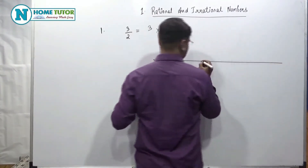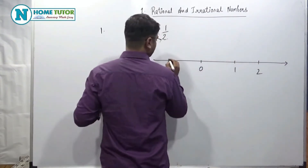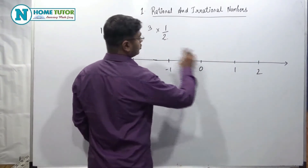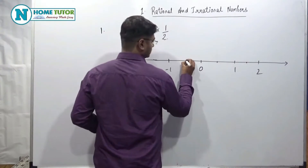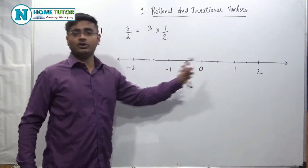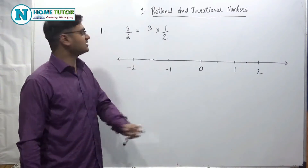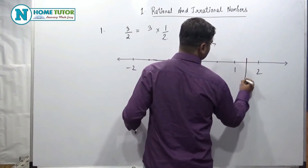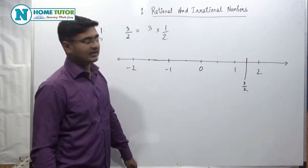If it is positive, this is 0, this is 1, this is 2, and so on. This is minus 1, this is minus 2. Each unit should be divided into 2 parts. Now, I have to see which point from 0 corresponds to the number. We need 3 points: 1, 2, 3. So this point is 3 by 2.